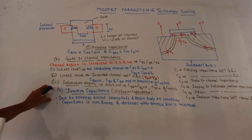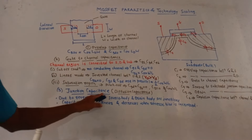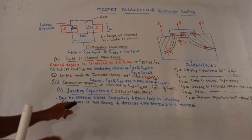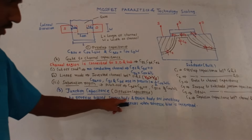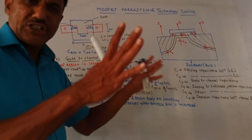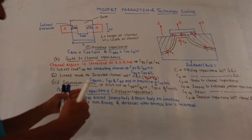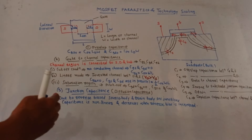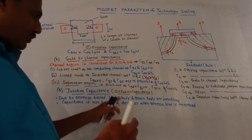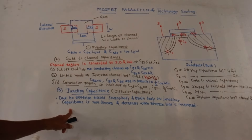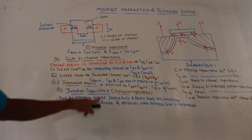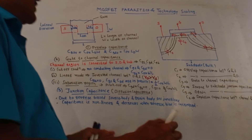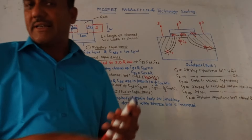The third broad type of parasitic capacitance is junction capacitance, also called diffusion capacitance. These capacitors are created due to reverse-biased source-body and drain-body PN junctions. This junction capacitance is non-linear and decreases if the reverse bias is increased. That covers the MOSFET parasitic capacitors.